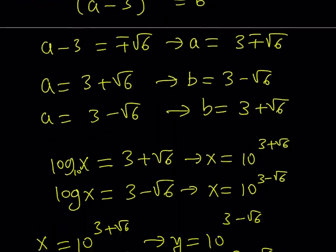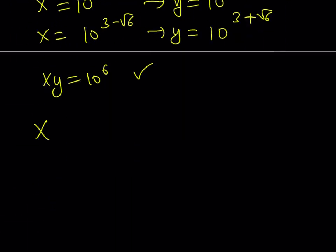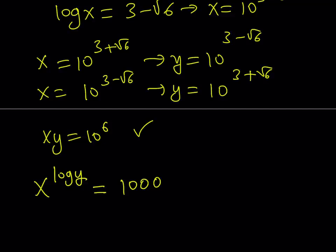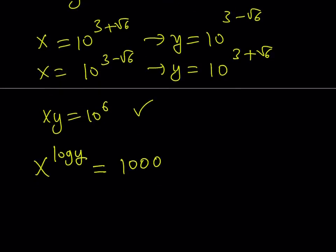The first equation gave us x to the power log y, right? So, let's go ahead and check that one. If you have x to the power log y is equal to 1,000, is that going to be satisfied as well? Let's go ahead and check it out. So, in the first case scenario, I have 10 to the power 3 plus root 6. And I'm raising it to the power log y. And remember, log y is just going to be the power of y, which is 3 minus root 6.